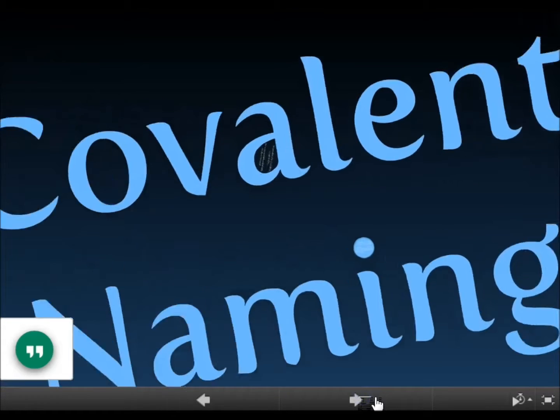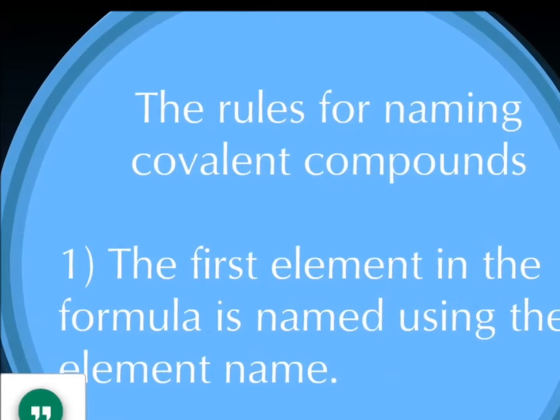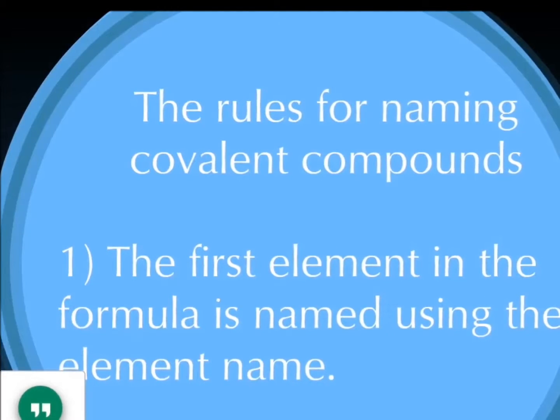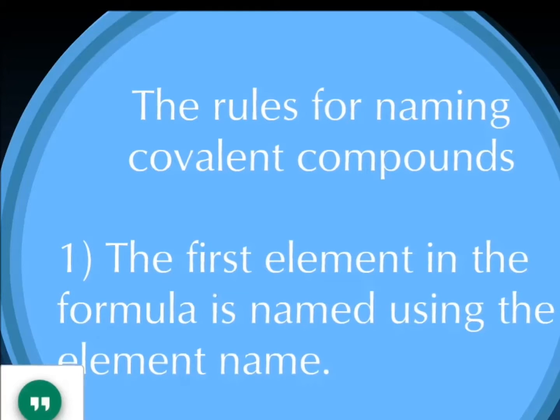Covalent bonding. The first thing we want to remember is that we're going to have a covalent compound if we have two non-metals. So here's some rules for naming with covalent compounds.